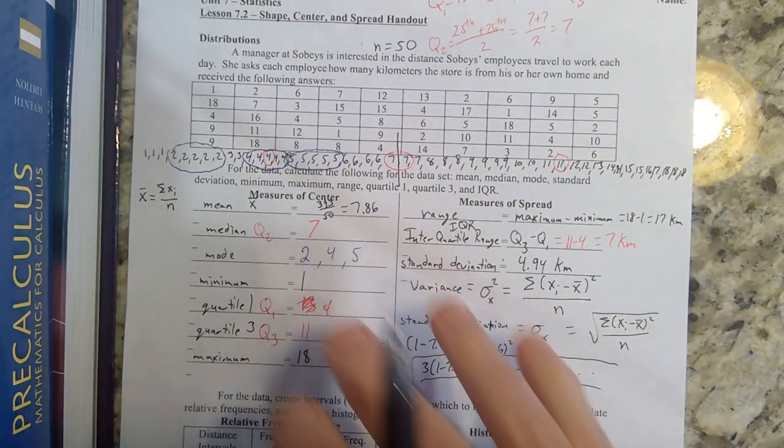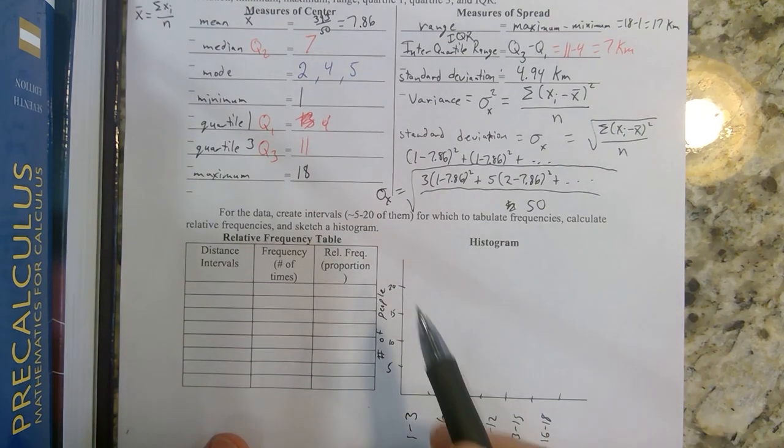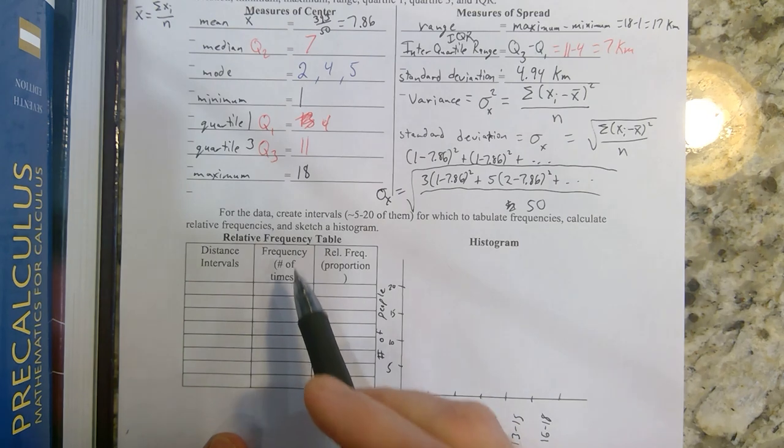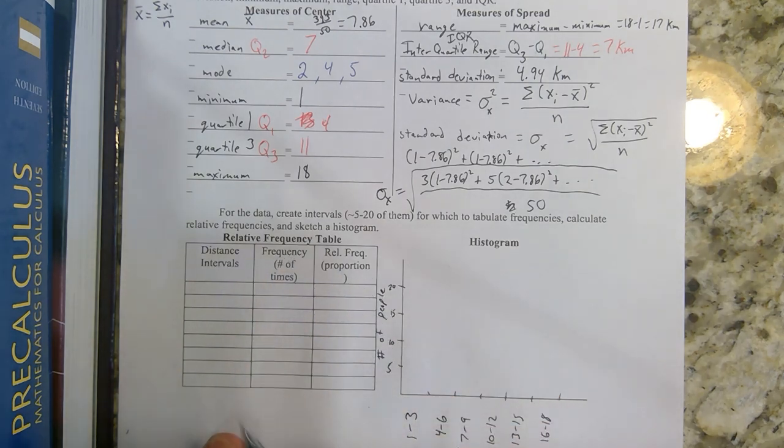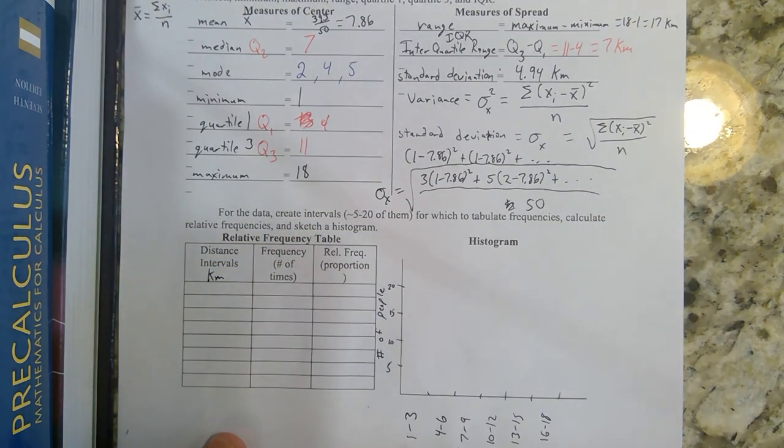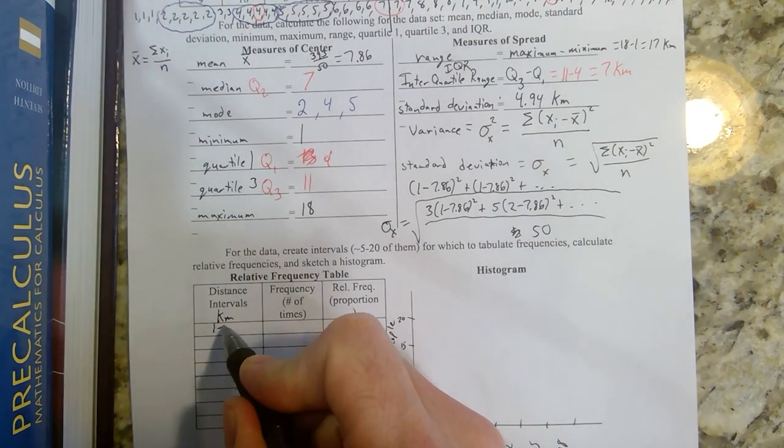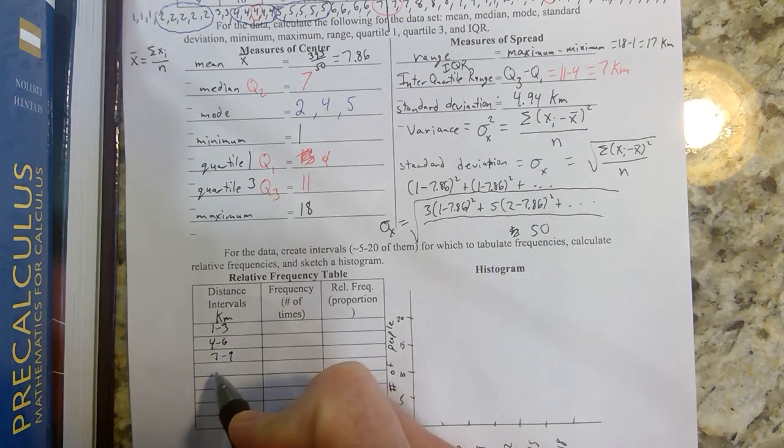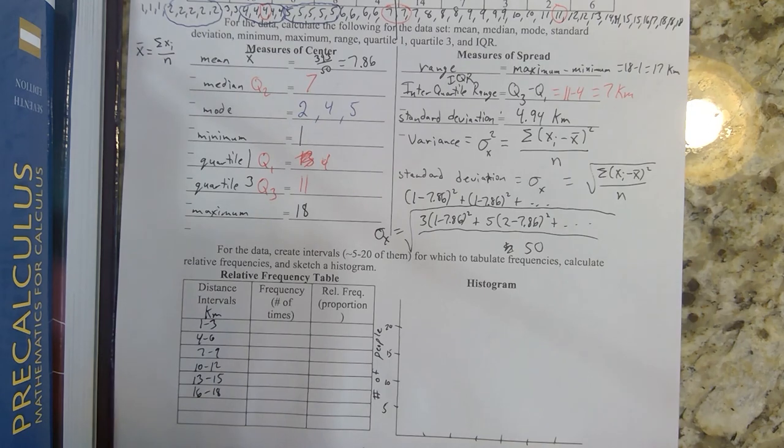Now that we've done all the calculations, we're going to make a graph. Coming down here, this is called a histogram. In order to make a histogram, you have to start by making a frequency table. This is going to be a frequency table, and this column will be a relative frequency. We're talking about distance in kilometers. We need to break this down into groupings or intervals that we're going to count how many pieces of data land in each interval. I'm going to break it down in intervals from one to three kilometers, four to six, seven to nine, 10 to 12, 13 to 15, 16 to 18. I can stop there because I've now captured all the data.